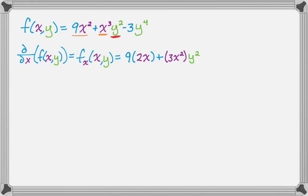And then we have this last term, so minus 3y⁴. There are no x's involved, which means that whole term is constant, and the derivative of a constant we know is 0. And you would want to kind of simplify this. So we get 18x + 3x²y².